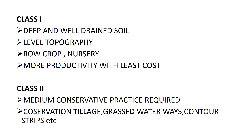The first land capability class is Class 1. Class 1 has deep and well-drained soil with level topography, so row crops can easily grow. Row crop is a crop that can be planted in rows, and many agricultural machinery like drilling machines and driller-cum-fertilizer equipment can easily be used on such lands. We can go for line sowing, and you can grow agricultural nursery, forest nursery, or any nursery you want. The most important feature of Class 1 is more productivity with least cost.